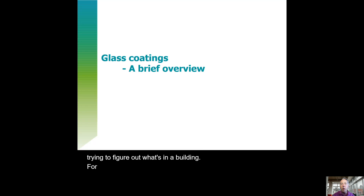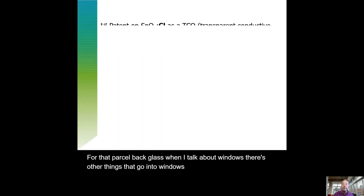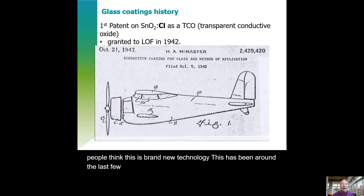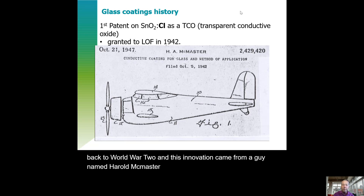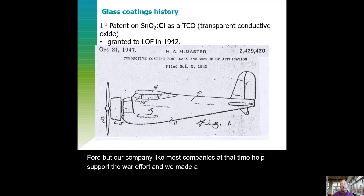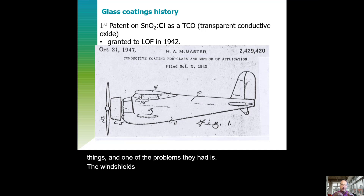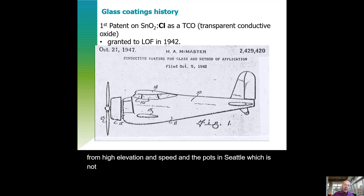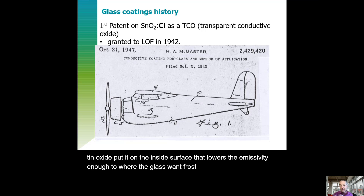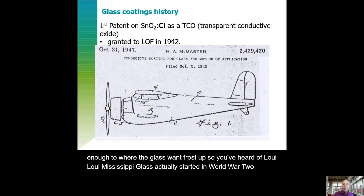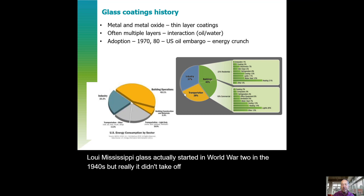When I talk about windows today, there are other things that go into them — glass coatings. Most people think this is brand new technology, but the first patents on coated glass date back to World War II. This innovation came from a guy named Harold Master, who also worked for Libbey-Owens-Ford. Our company, like most at that time, helped support the war effort — we made transparencies for planes. One of the problems was that the windshields in fighter planes would frost up from high elevation and speed. The solution was to take chlorine-doped tin oxide and put it on the inside surface to lower the emissivity enough so the glass wouldn't frost up. So low-E — low emissivity glass — actually started in World War II in the 1940s.